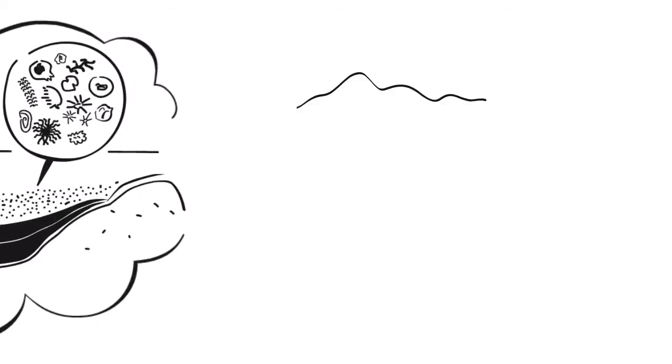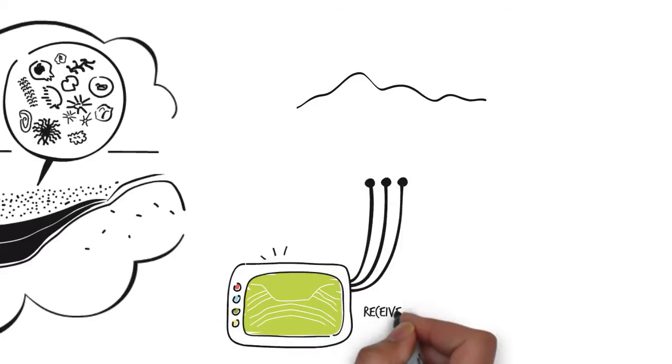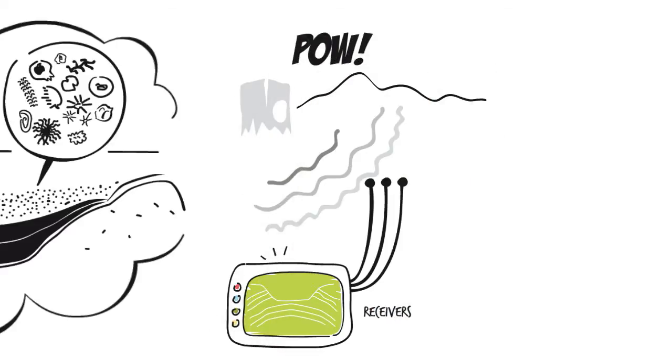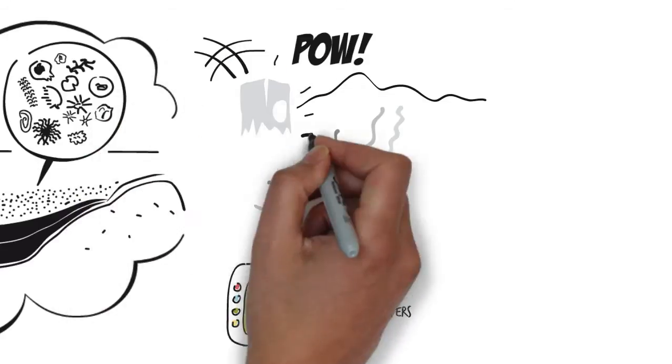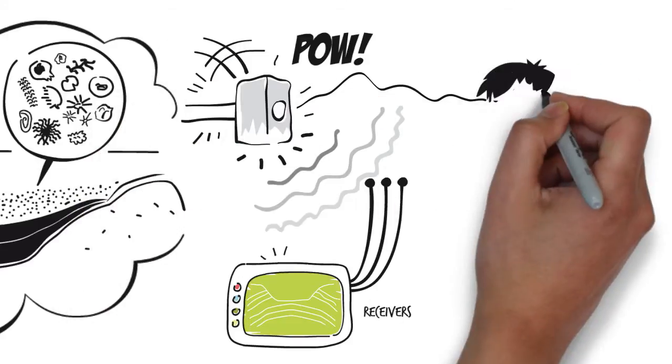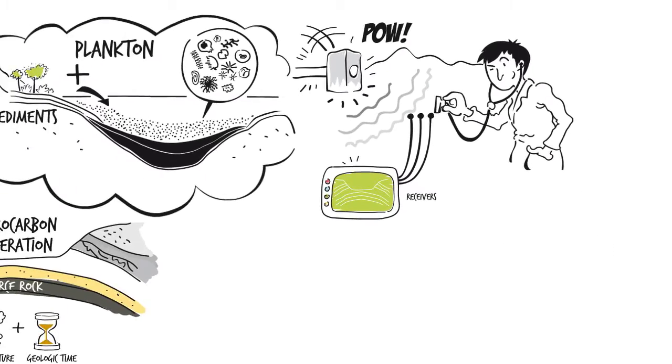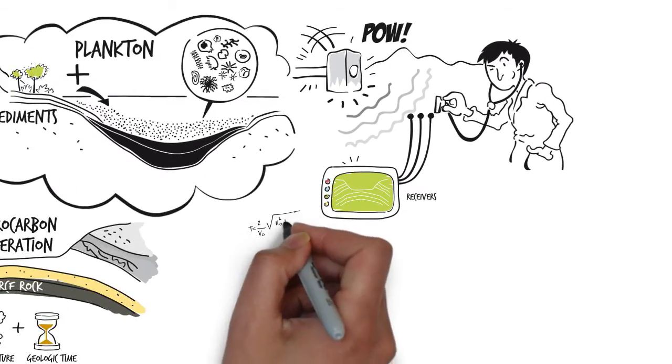The area to be surveyed is mapped out. Receivers are set up to record the seismic waves on the surface. A survey is carried out using acoustic waves. And the time which elapses between the emission of the sound waves and their return is measured.